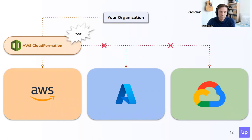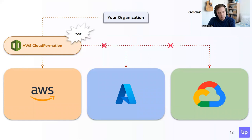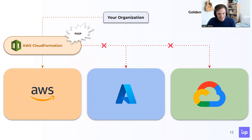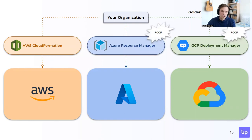CloudFormation came along for AWS and gave an easy way to model a collection of related AWS and third-party resources, so you can provision them quickly and consistently and manage them throughout their lifecycle by treating infrastructure as code. But CloudFormation is an AWS technology — it's pretty specific to AWS, and it's going to be difficult to manage different services outside of AWS. The golden age meter is getting a little bit closer. We have this infrastructure-as-code paradigm now, but it won't scale across different cloud providers.